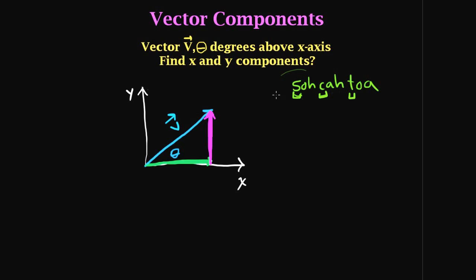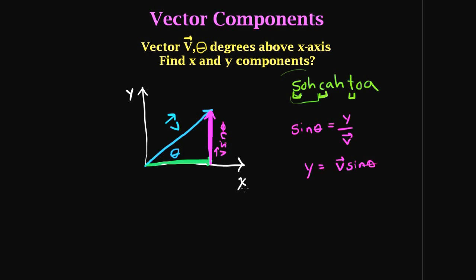So what would the y component be? The y side is the opposite side, so we use sine: sine of theta equals the opposite side over the hypotenuse, and our hypotenuse is vector V. So sine of theta equals the opposite side over V. Multiplying both sides by V gives us the opposite side equals V sine theta. These two components make up the vector, and this y component has a magnitude of V sine theta.